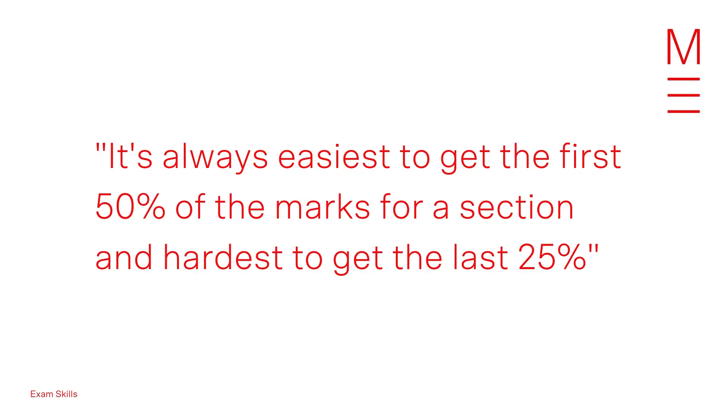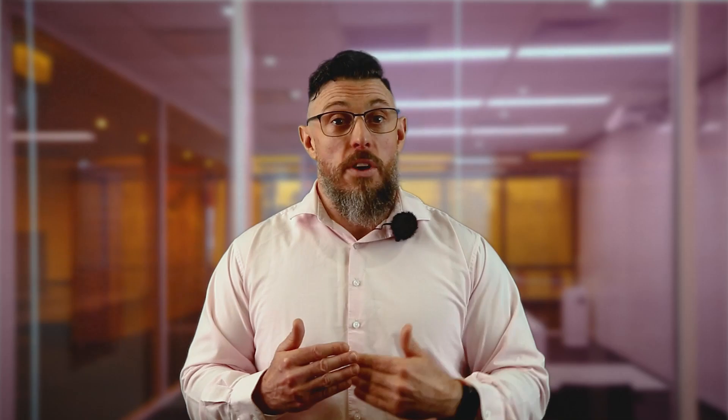The first and most important rule for time management is knowing when to cut your losses. If you're running out of time on a section — be it short answers or an essay — cut your losses, stop that section and move on to the next. It's always easiest to get the first 50% of the marks for a section and hardest to get the last 25%. With that in mind, rather than spending time on an essay that could be better used starting your mod C, start your mod C piece. Don't waste moments on a four mark short answer question when there's a seven mark question up for grabs.